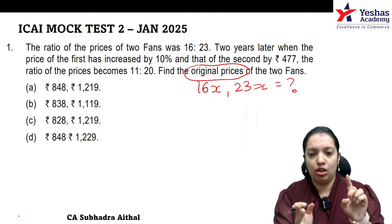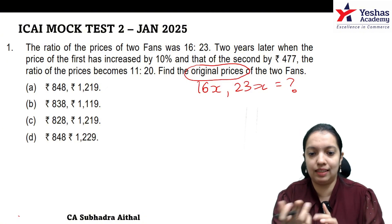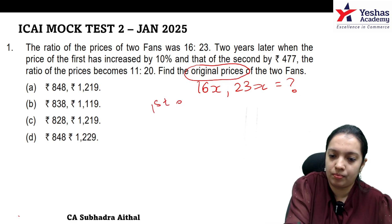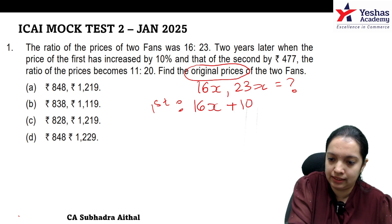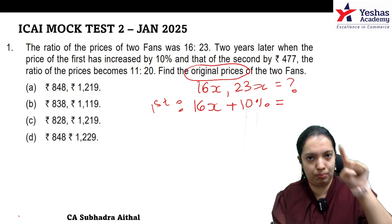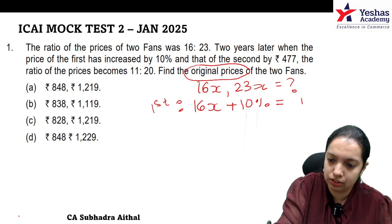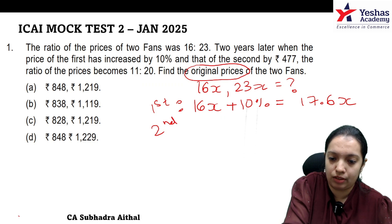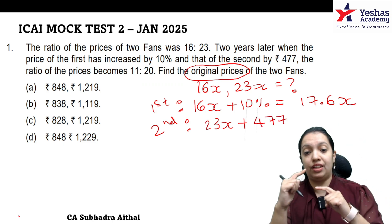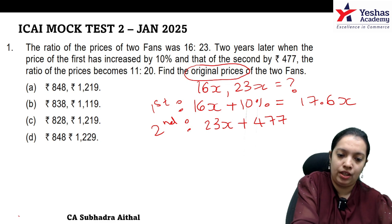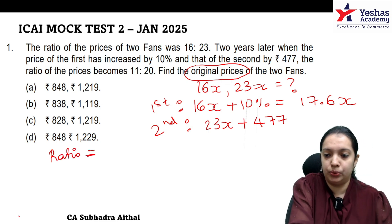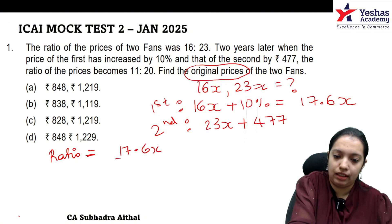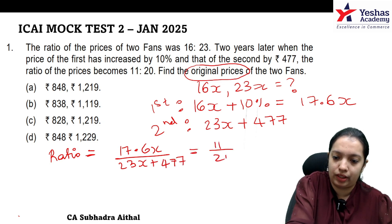Two years later, the price of the first fan has increased by 10%. It was 16x, so after 10% increase you get 17.6x. The second fan price was 23x and has increased by 477, so you add 477 to get 23x + 477. The ratio of these two prices is given as 11 to 20: 17.6x divided by (23x + 477) equals 11 to 20.